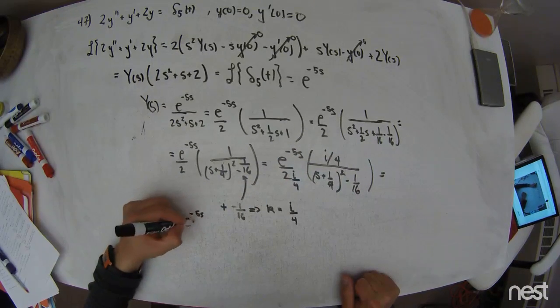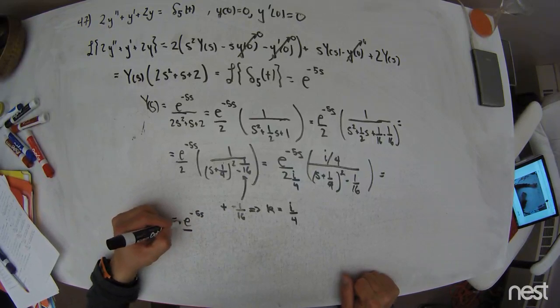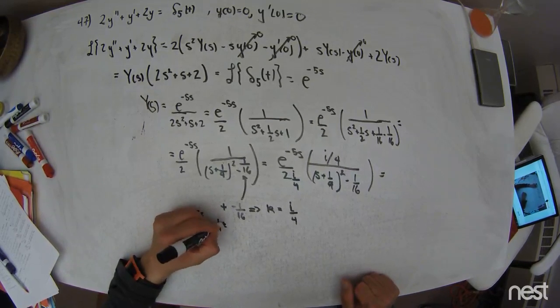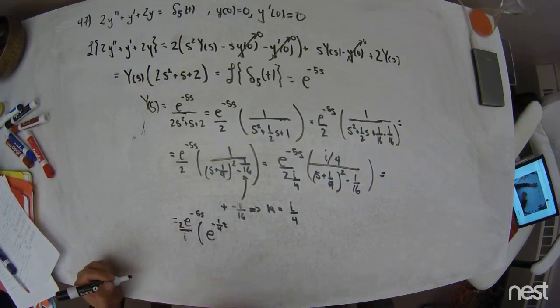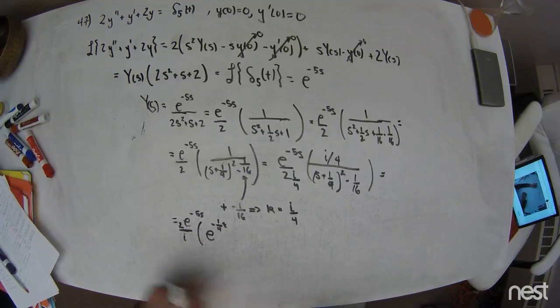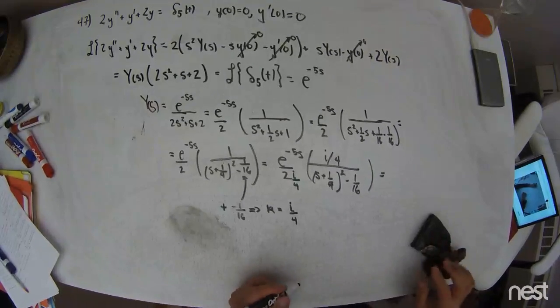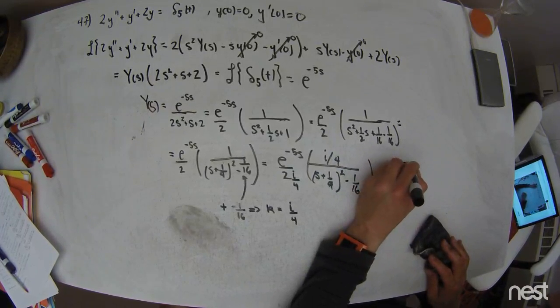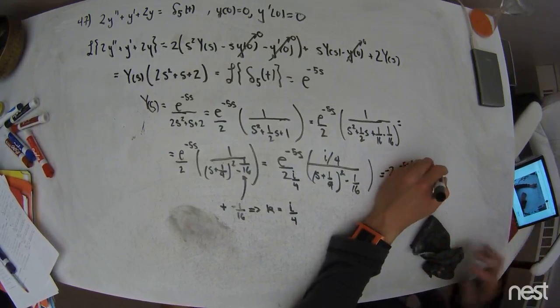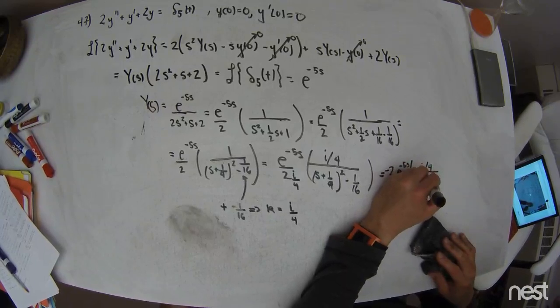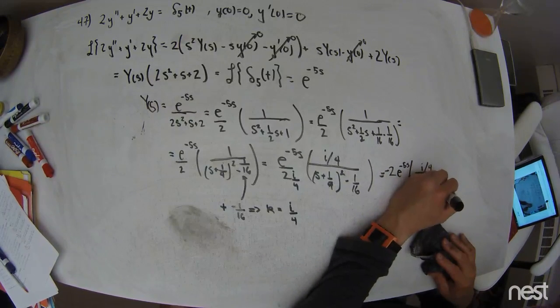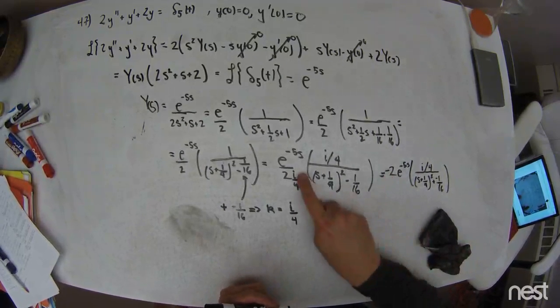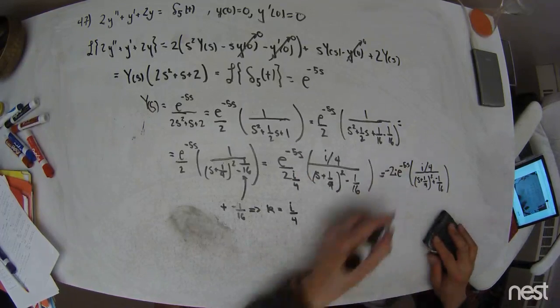So this is e to the negative 5s over i times e to the negative 1 fourth t times i. I'm inverse transforming already. Okay, so let me write this out a little more cleanly. This is going to be 2 with a negative times e to the negative 5s times i over 4 over s plus 1 fourth quantity squared minus 1 sixteenth. Or plus negative 1 sixteenth. The negative came about because I multiplied by i over i. So there should actually be an i in the numerator, too, right there.